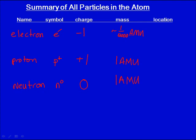Where are these located? Well, the proton and the neutron make up the nucleus, whereas the electron is found outside the nucleus.